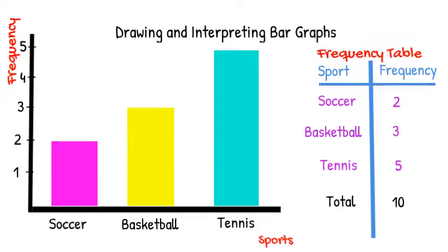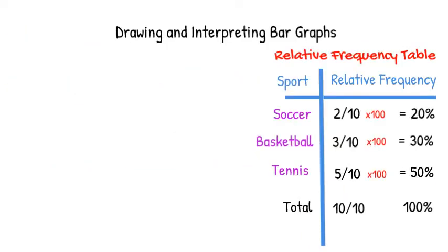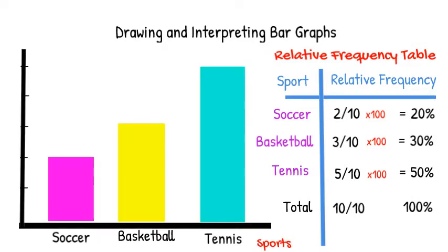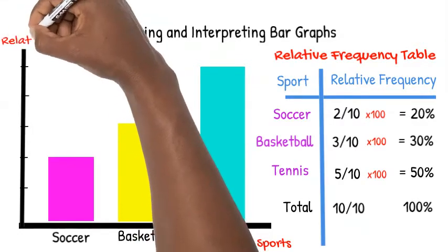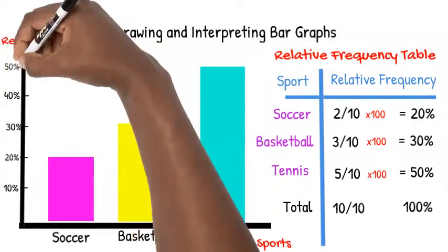We can also draw a relative frequency bar graph. Recall that relative frequency is the portion or percent of cases in each category. We find relative frequency by dividing each frequency by the total and multiplying by 100. Notice that the bars on our graph are the same as the frequency bar graph, but we label our y-axis with fractions or percents instead of frequencies.